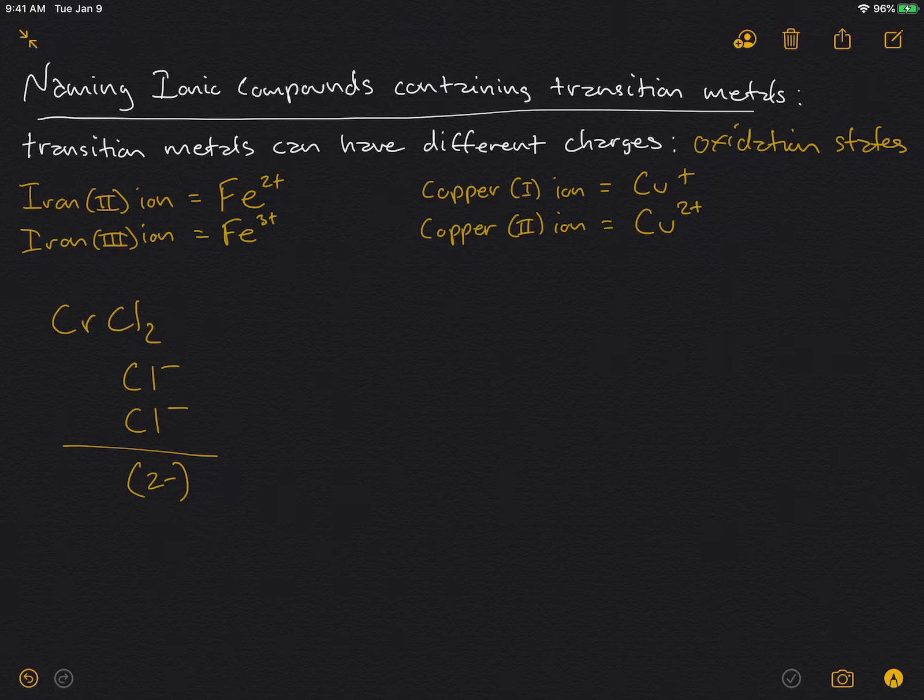That's two minus charges, and overall, whatever the positive charges are, when we add those to the minus charges, the overall charge on this compound is zero. So that means that we must have a 2+ charge on the metal.